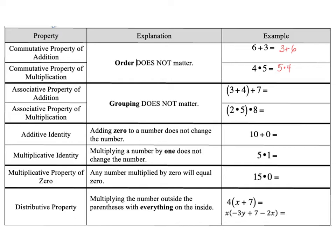The associative property says when we are adding or multiplying, the way we group things together also does not matter. So for instance, look at my examples for addition. I have here 3 plus 4 plus 7.